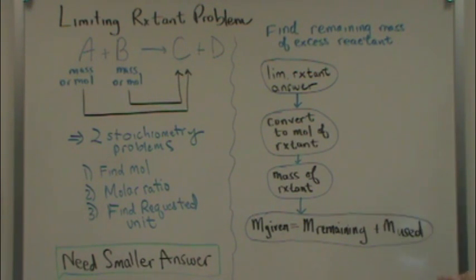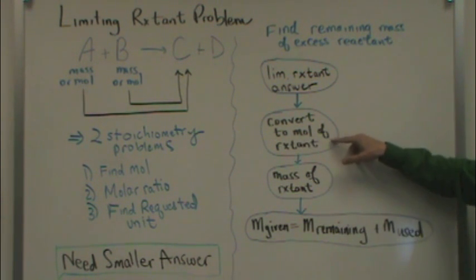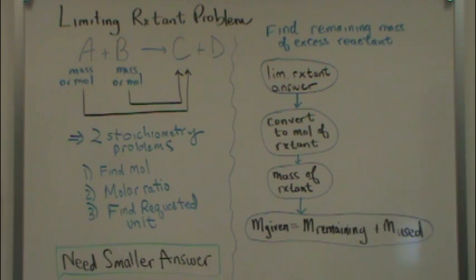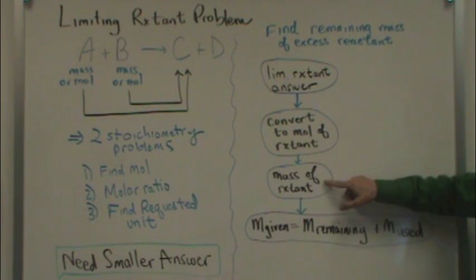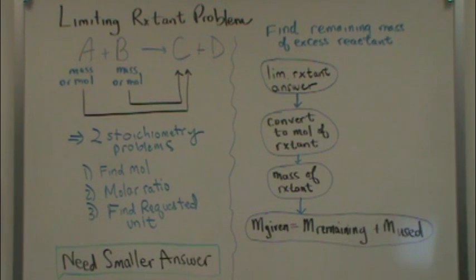And then you'd use a molar ratio and find the moles of the reactant in excess. So, now you do a stoichiometry problem to get the moles of the reactant in excess. Then you'd convert from moles to mass of the reactant in excess.